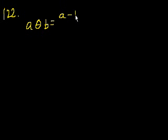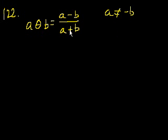Question 122. An operation theta is defined by the equation a theta b is equal to a minus b over a plus b, for all numbers a and b, such that a does not equal minus b. That ensures that the denominator does not equal 0. If a equaled minus b, then it would be undefined, because you'd have something divided by 0.